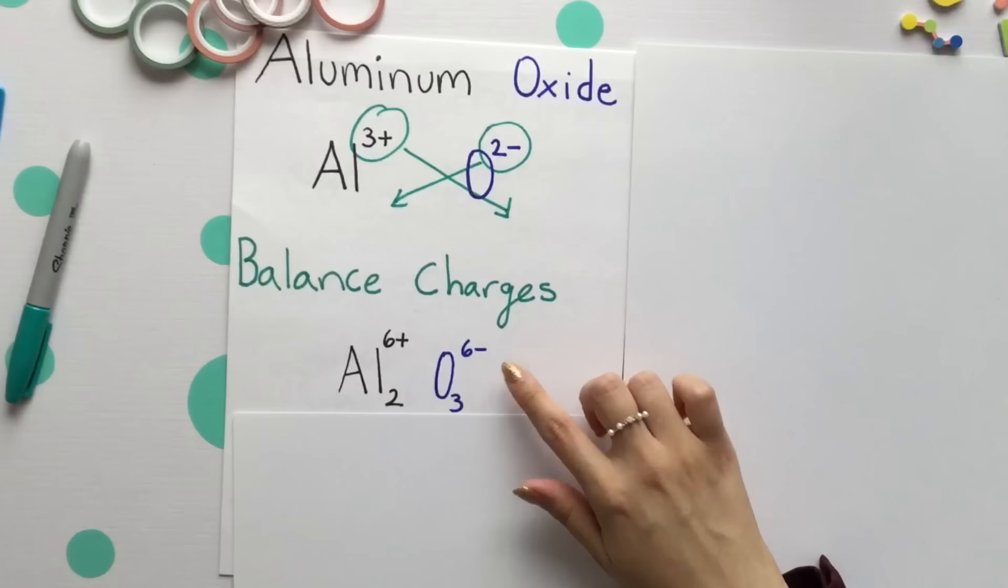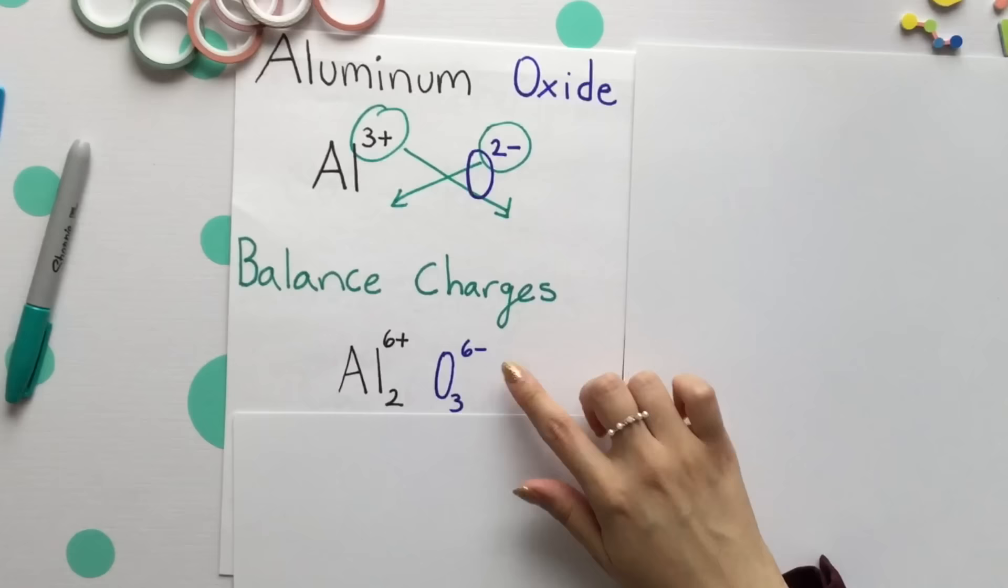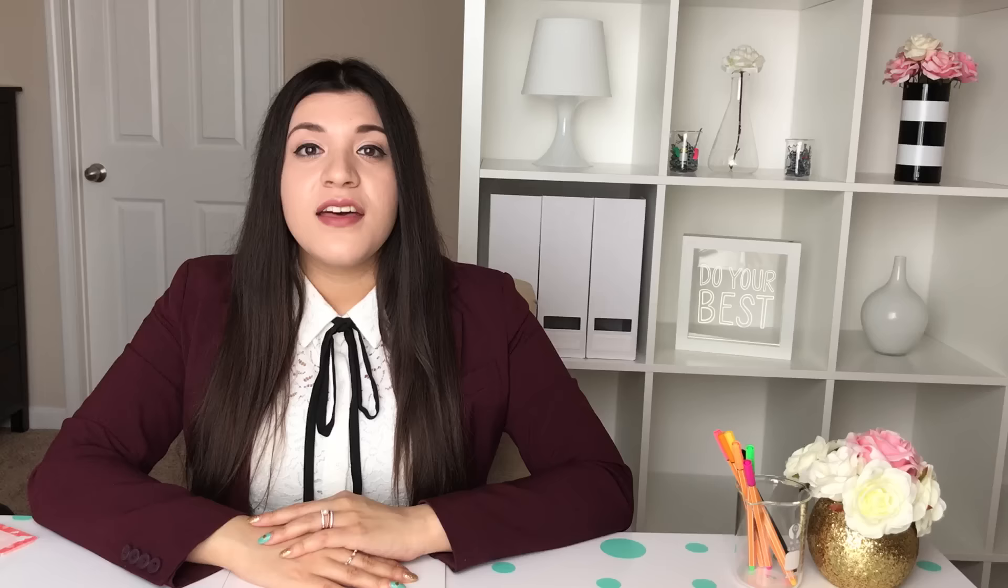They cancel out the charges and are neutral. Our final balanced compound is aluminum oxide having that subscript of 2 and 3.